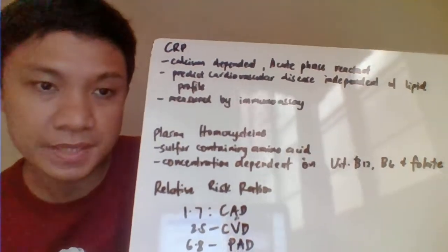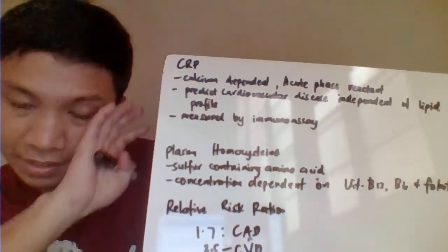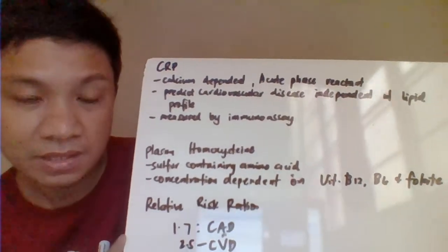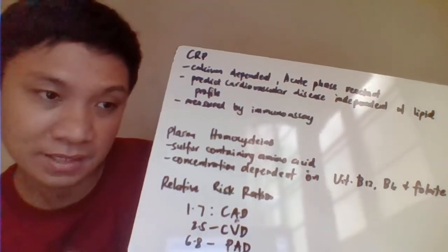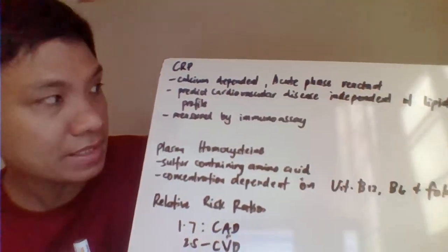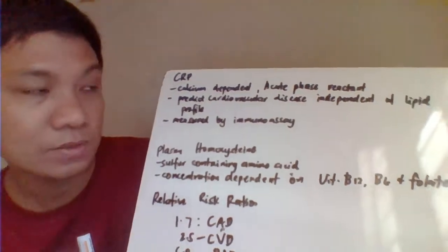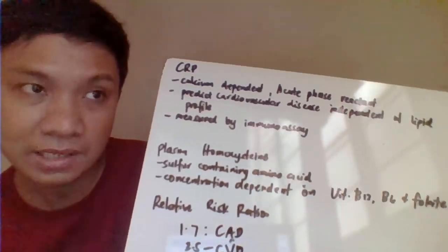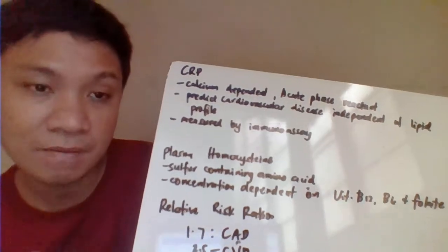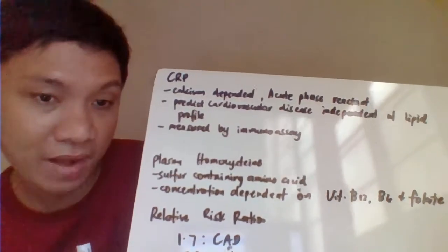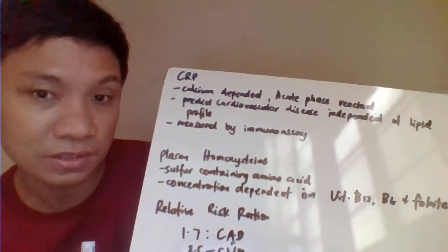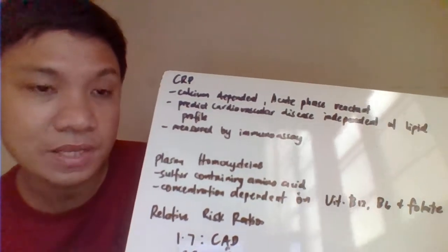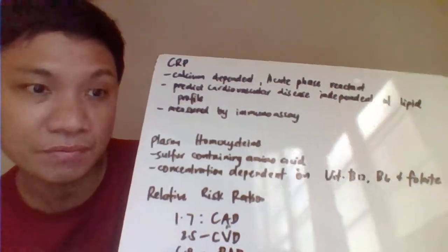CRP is an acute phase reactant primarily produced by the liver, calcium-dependent, and used to predict cardiovascular disease risk independent of lipid profile results. It can stand alone as a predictor of cardiovascular disease.